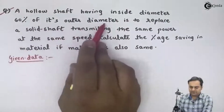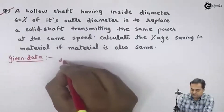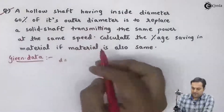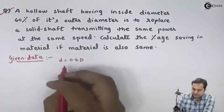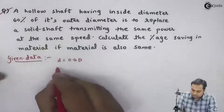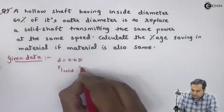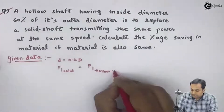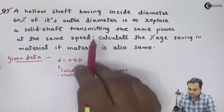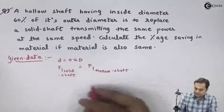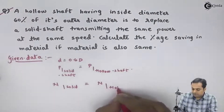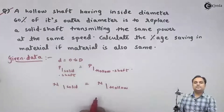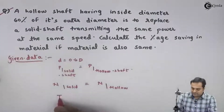A hollow shaft having inside diameter 60 percent of its outer diameter — so inside diameter of the hollow shaft is small d, equal to 0.6 times capital D. This hollow shaft will replace the solid shaft transmitting the same power: power of solid shaft equals power of hollow shaft. Speed is also the same: RPM for solid equals RPM for hollow.